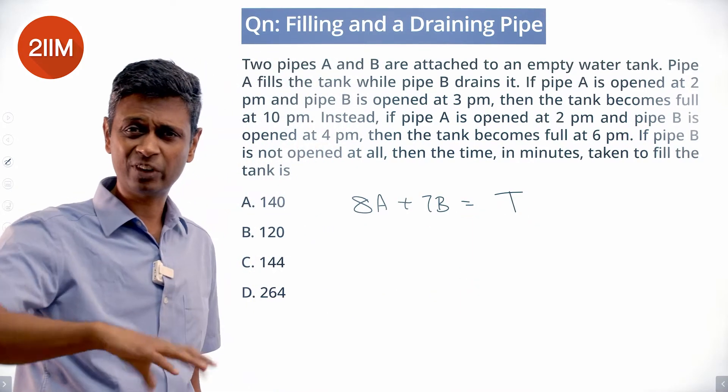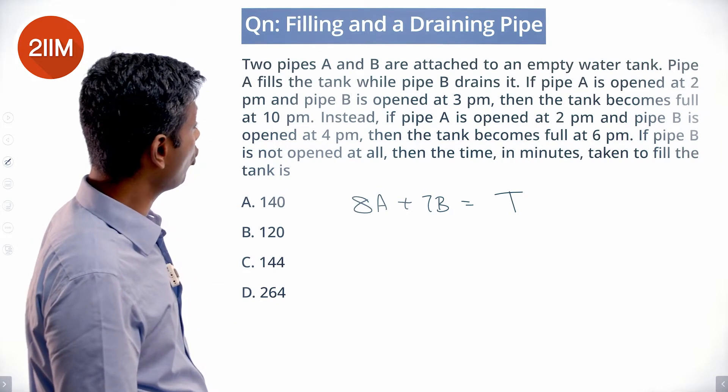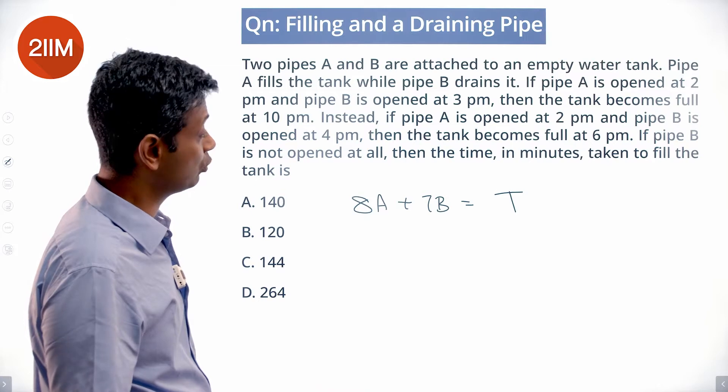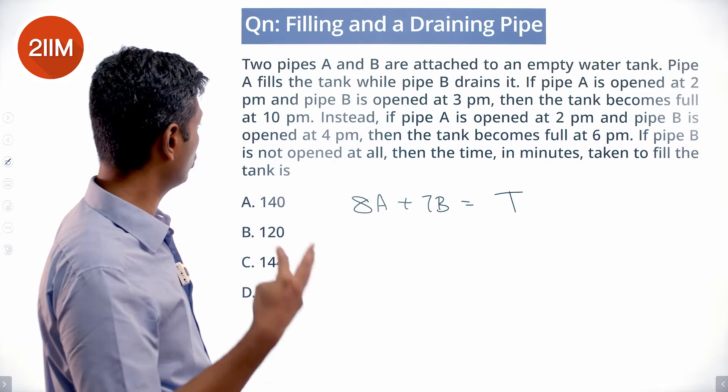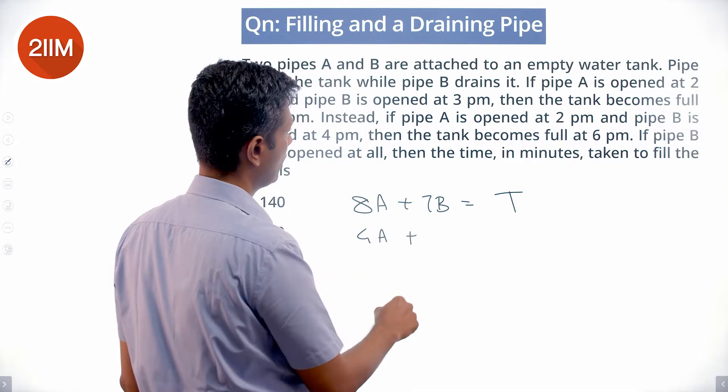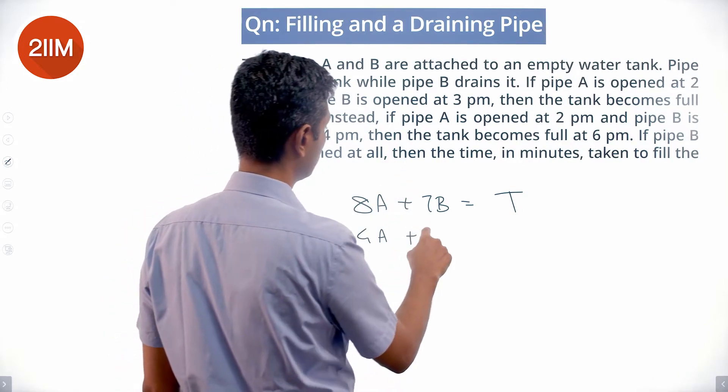B is a negative number in draining. Instead, if A is opened at 2 pm and pipe B is opened at 4 pm, the tank gets full at 6 pm. So pipe A is open for 4 hours, pipe B is open only for 2 hours: 4A plus 2B equals the tank capacity.